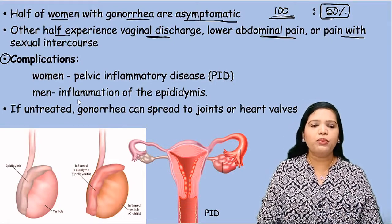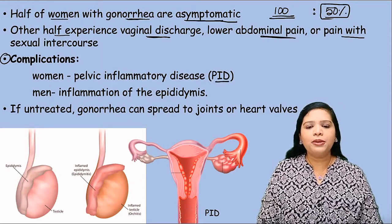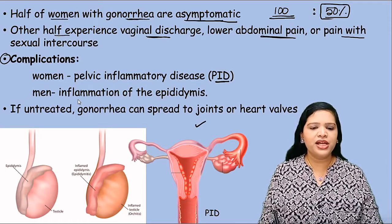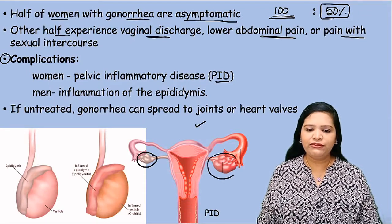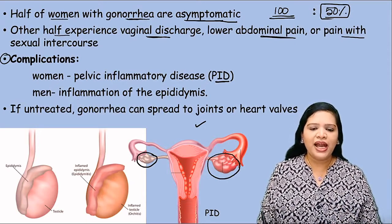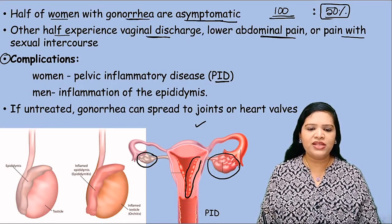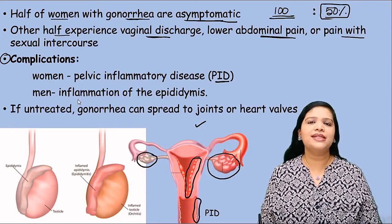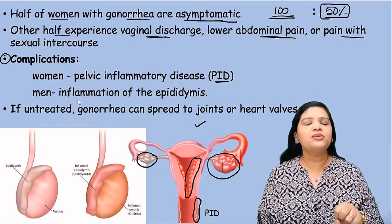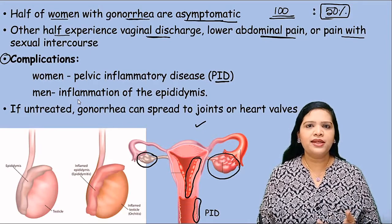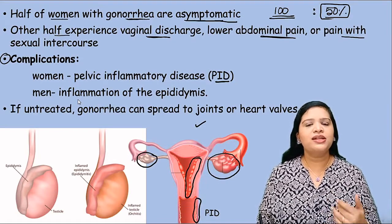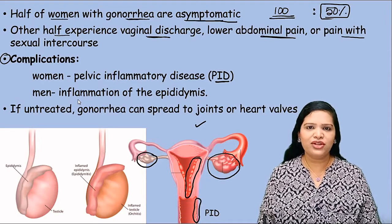Particularly in the case of women, it leads to pelvic inflammatory disease, called PID. In pelvic inflammatory disease, inflammation occurs in several parts of the reproductive tract — the uterus, endometrium, and vaginal region are all inflamed. And if she becomes pregnant, the fetus will not grow properly — abortion or stillbirth will occur; the baby may die in the uterus itself. So abortion and stillbirth are complications due to this infection in the female.